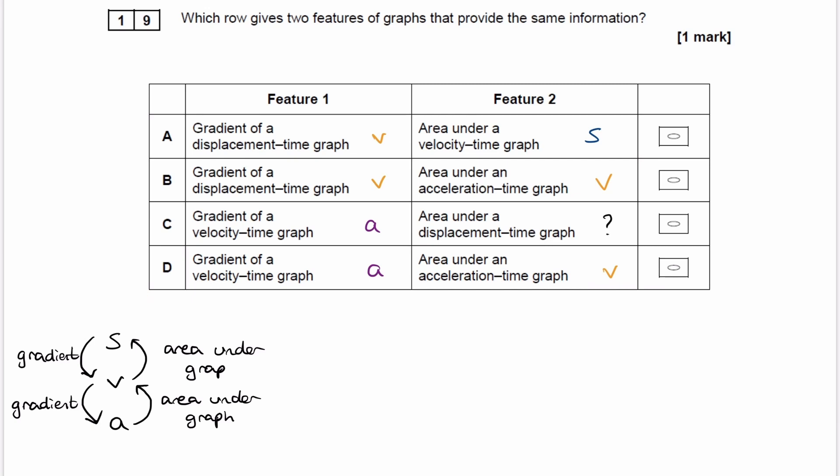So it is option B, where the gradient of a displacement-time graph and the area under an acceleration-time graph give us the same thing: velocity. The answer is B.